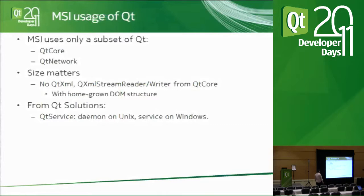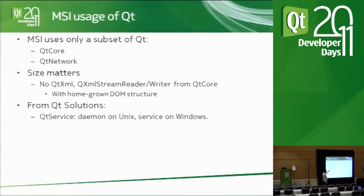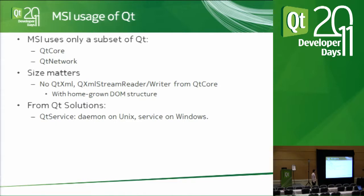How do we use Qt? We only use two modules: Qt Core and Qt Network — that's all we need. For instance, when we recently needed XML functionality, we had the choice of Qt XML or the SAX-based XML stream reader/writer which is part of Qt Core. We went for the latter because of our memory minimality goal. We also use Qt Service from Qt Solutions, which allows your system to be daemonized on Unix or appear as a Windows service with relatively low effort. We're very happy with it.